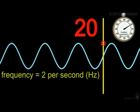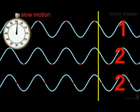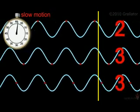This is the frequency of the wave. It doesn't matter whether you count peaks, troughs, or somewhere in between, as long as you count the same part of the wave every time.